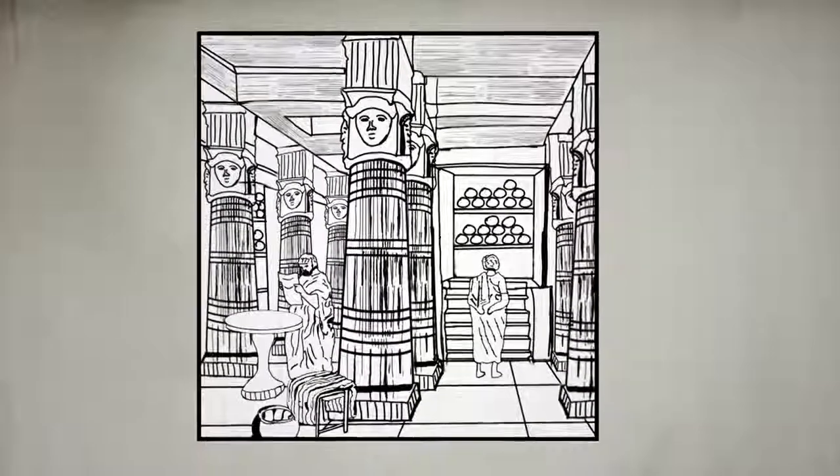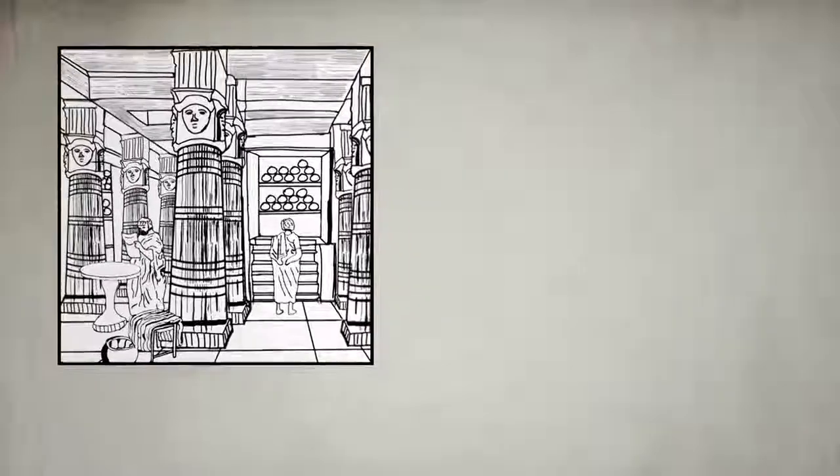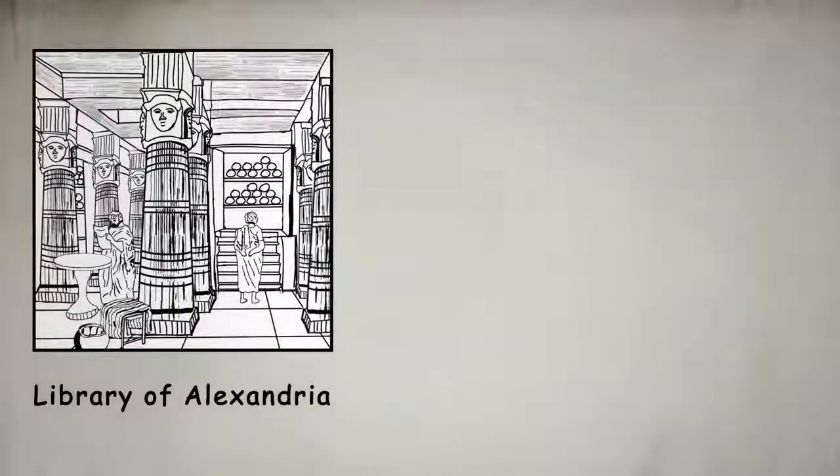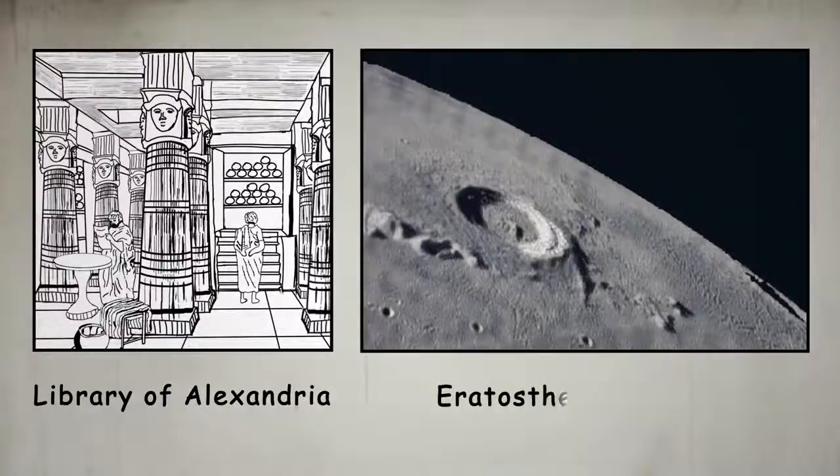He was a rather accomplished person who went on to become the chief librarian at the Library of Alexandria and in fact even has a lunar crater named after him.